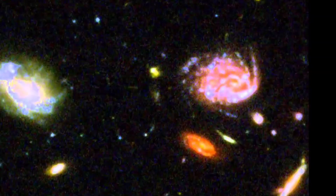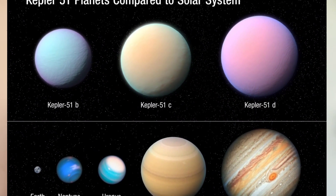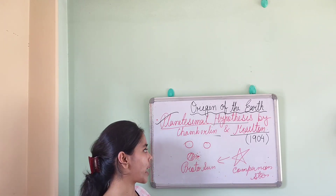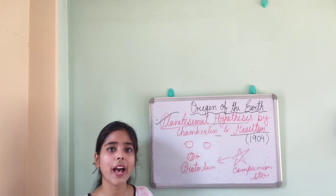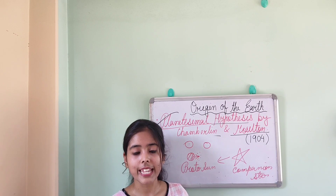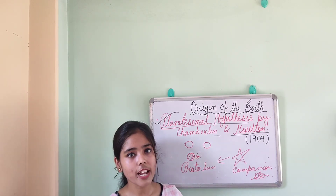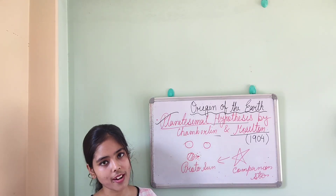Chamberlain and Moulton also stated one important thing: that these planetesimals were not evenly distributed at all, and the shape of the tiny particles was not the same. That is why the planets in our solar system do not all have the same shape. This is all about the Planetesimal Hypothesis derived by Moulton and Chamberlain. In the next class I am going to discuss the Tidal Hypothesis by Jeans and Jeffries. Thank you and take care.